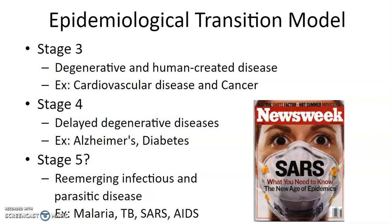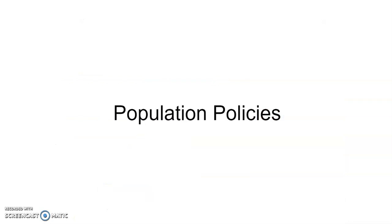Stage 4 involves delayed degenerative diseases — lifestyle choices made earlier in life lead to diseases later, such as Alzheimer's and diabetes. Stage 5, which we are now emerging into, involves reemerging infectious and parasitic diseases like pandemic flu, COVID-19, malaria, TB, SARS, and AIDS. The epidemiological transition model explains the stages of death for humans over the course of civilization.